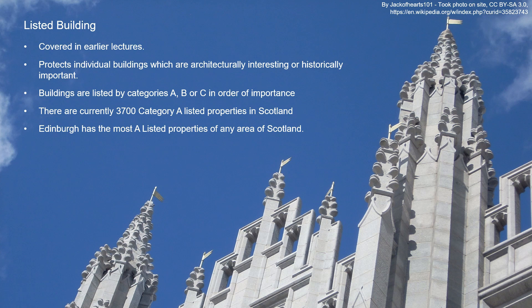Coming down to single buildings, we can use listed building status to protect individual buildings that are architecturally interesting or historically important. Depending on their level of importance, they are listed under A, B, or C. Category A relates to nationally important buildings, right down to Category C which is a good local building they want to preserve. Within Scotland there are currently around 3,700 Category A listed properties, with the largest proportion in Edinburgh.